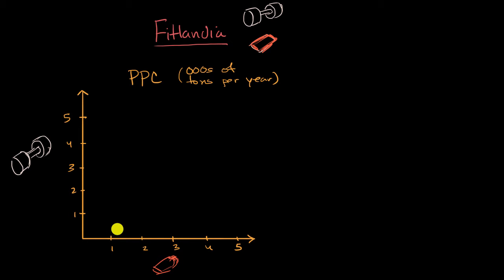And let's say we know that we're maybe the economics minister for Fitlandia, or the secretary of commerce, or something like that. And we know that if we put all of our energy into dumbbells, and optimally allocated our resources, we could produce 4,000 tons of dumbbells in a year. We also know that if we wanted to produce some protein bars, we're going to have to give up our production of some dumbbells.